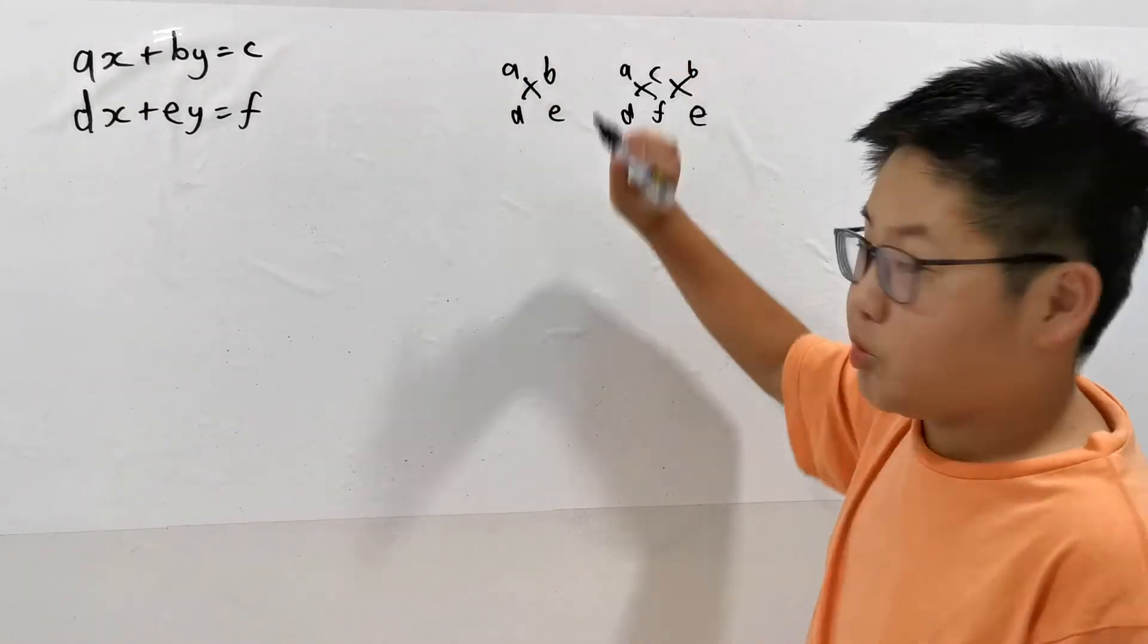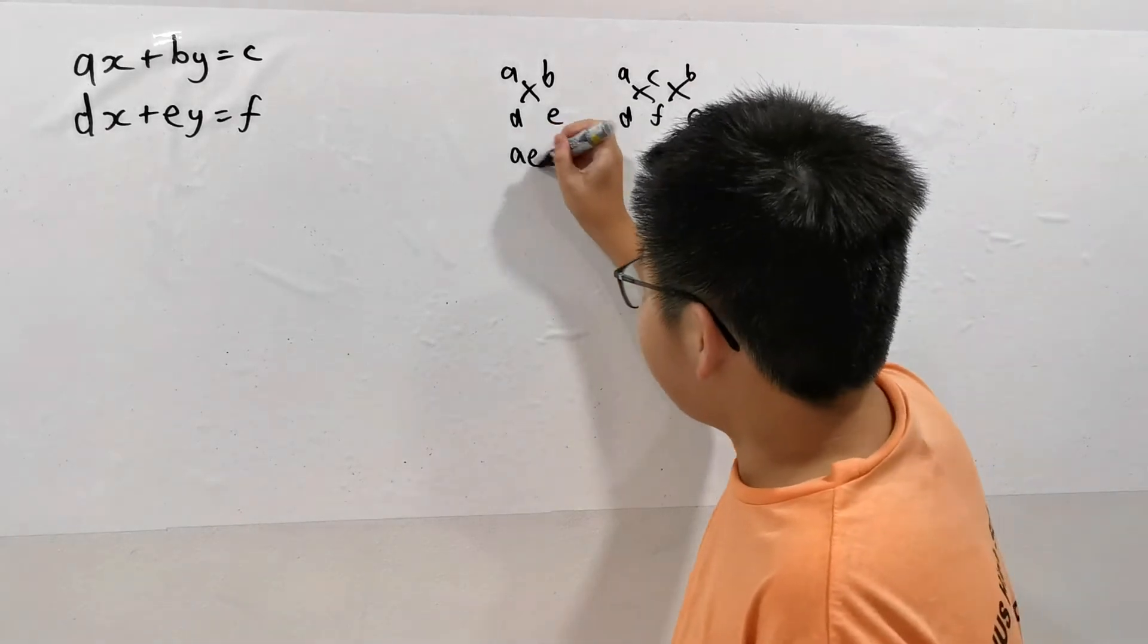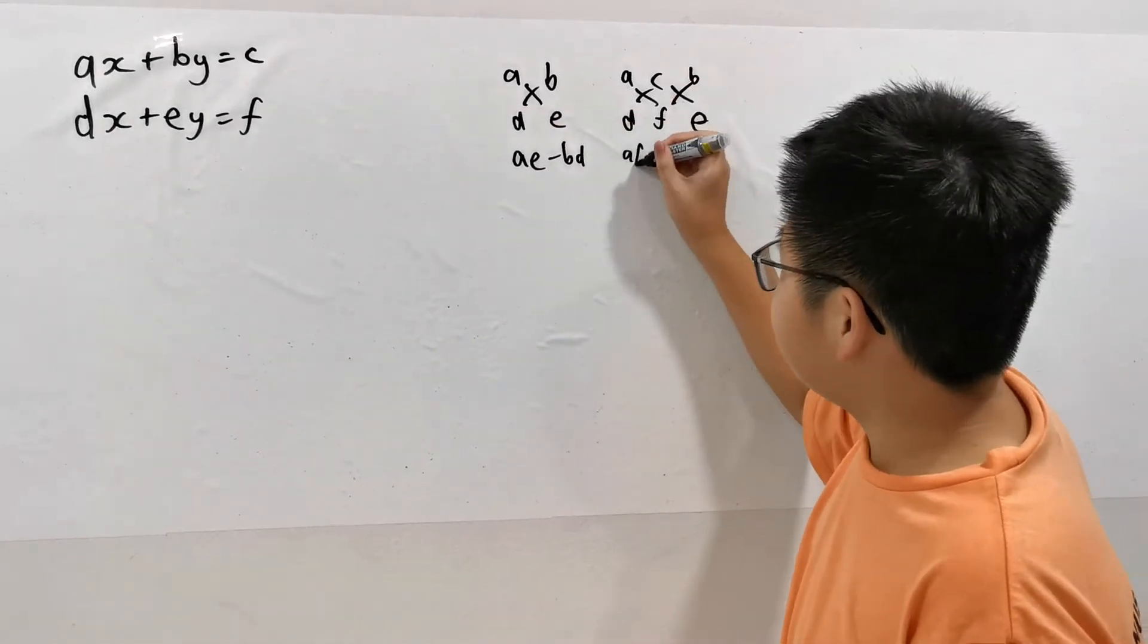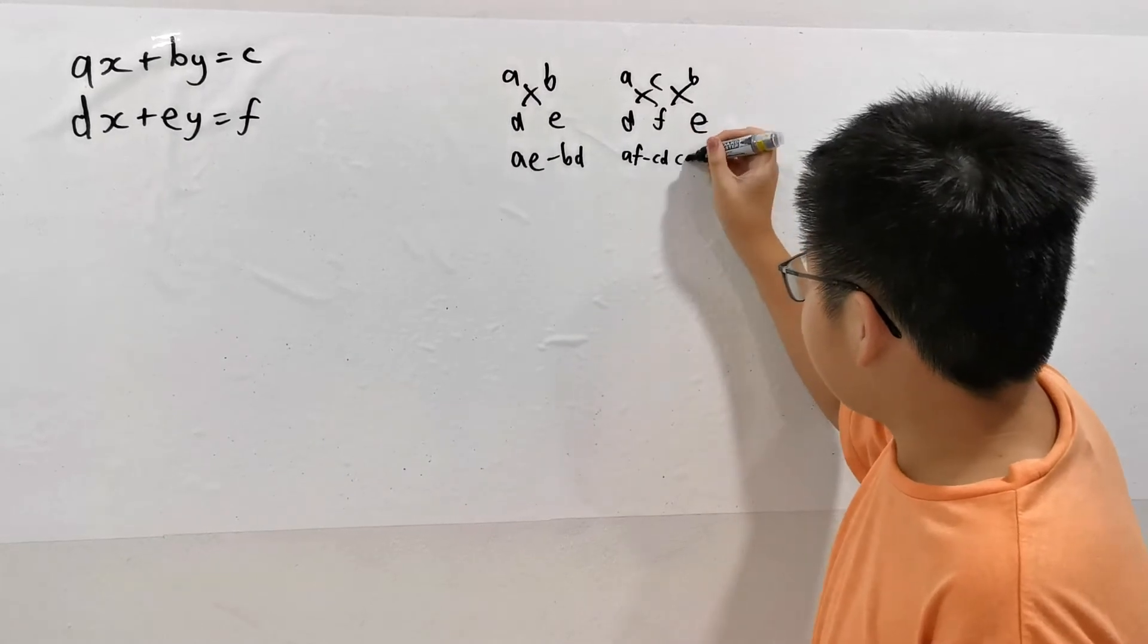So A times E minus D times B. We calculate A, E minus B, D. We have A, F minus C, D. And C, E minus B, F.